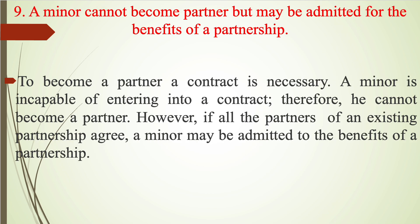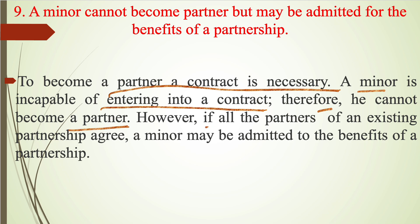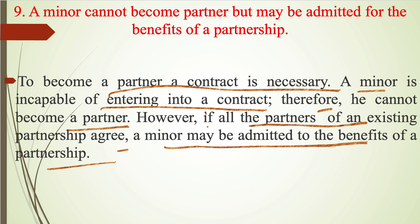Ninth, a minor cannot become a partner but may be admitted for the benefits of a partnership. To become a partner, a contract is necessary. A minor is incapable of entering into a contract, therefore he cannot become a partner. However, if all the partners of an existing partnership agree, a minor may be admitted to the benefits of a partnership. So while a minor cannot be a full partner, he can enjoy the benefits of a partnership.